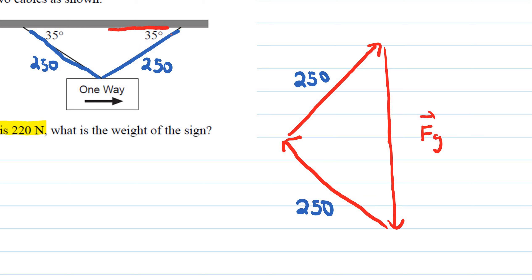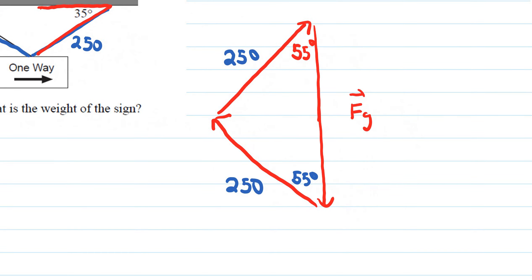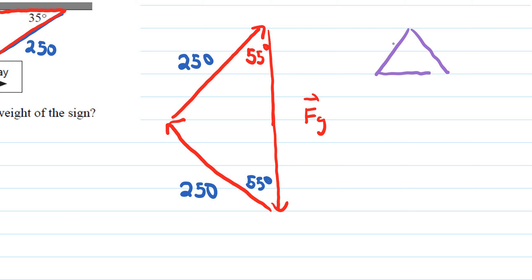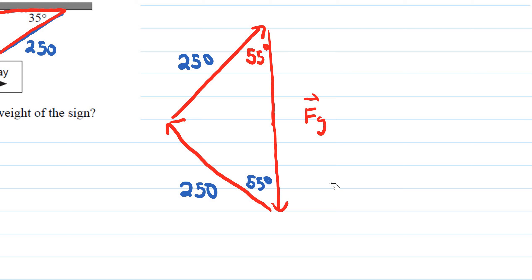If this angle is 35 degrees, we can do 90 minus 35 to get 55 degrees for the inner angle. Because it's an isosceles triangle — two equal sides mean two equal base angles — both base angles are 55 degrees. So 55 plus 55 is 110, leaving 70 degrees for the top angle.